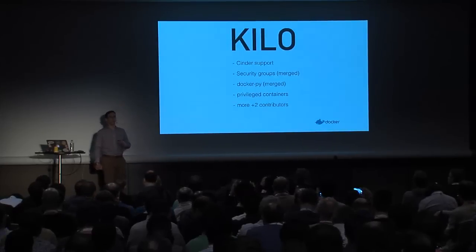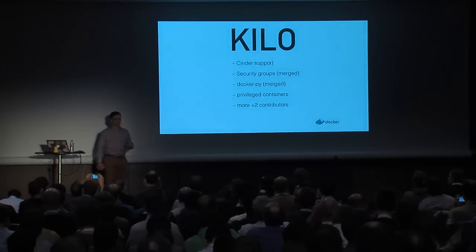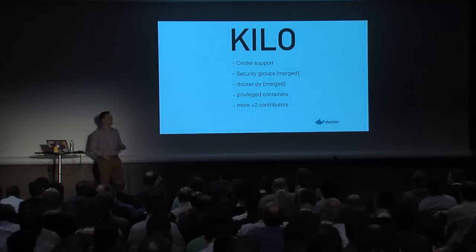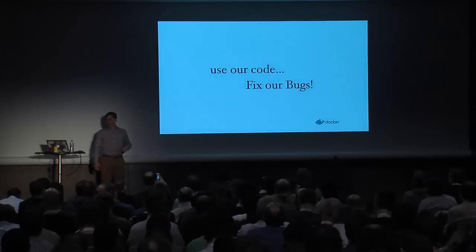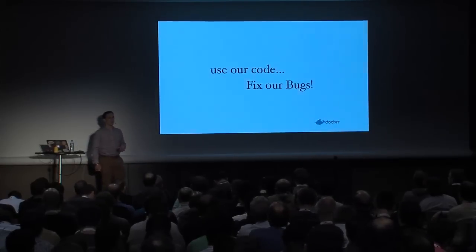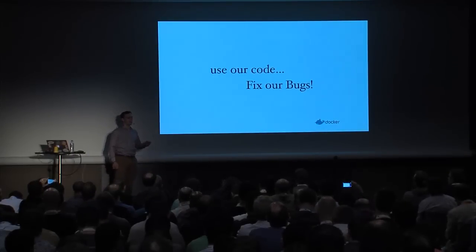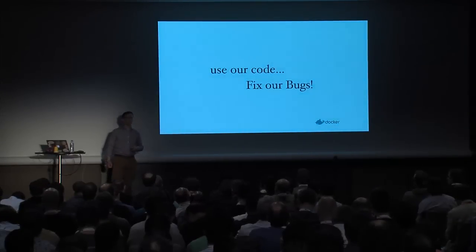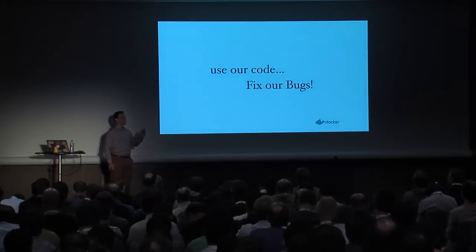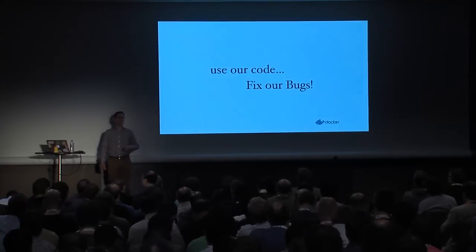We want more plus-two contributors. Ian is our first plus-two contributor besides myself and technically Russell Bryant, who created the repo and got grandfathered into owning a plus-two but has never exercised it. Finally: use the code — it's ready for people to start using. We have production users. Some have been burned by changes we made quickly, but we have production users using Neutron, which is almost more surprising. Submit bugs, fix bugs — the more people we have doing that, the more plus-two contributors we can get and the bigger we can build this community.